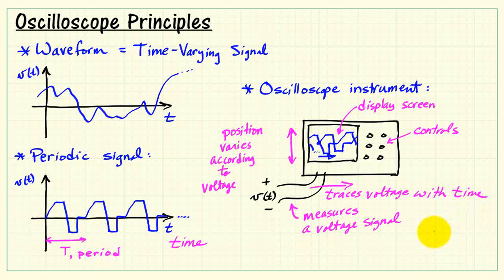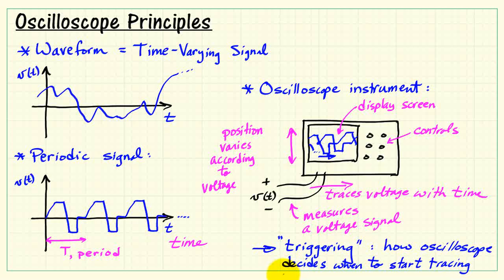This idea of when to actually start the spot moving across the screen is associated with what's referred to as oscilloscope triggering. Triggering is how the oscilloscope decides when to start the trace moving across.